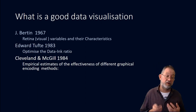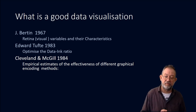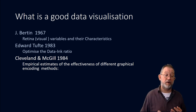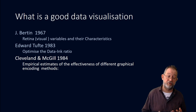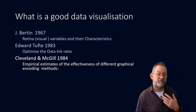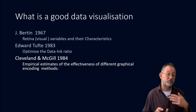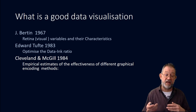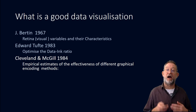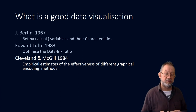Cleveland and McGill tried to measure how efficient different ways of communication were. They visualized the same data in different ways, then asked a large cohort of people to judge comparative magnitudes and compared the results — using that to determine how we most precisely communicate data.